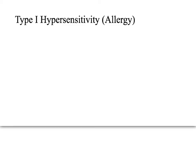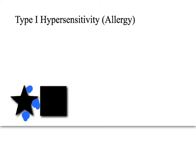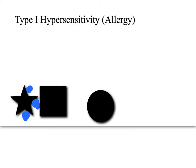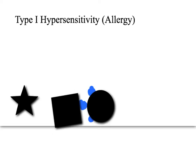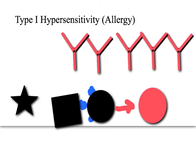Type 1 hypersensitivity is essentially what we call allergies. First, an antigen presenting cell picks up a bunch of antigens and takes them over to the T helper cell, activating it. Then the T helper cell presents the antigens to the B cell and says make antibodies against these. This causes the B cell to change into a plasma cell, which starts producing antibodies.